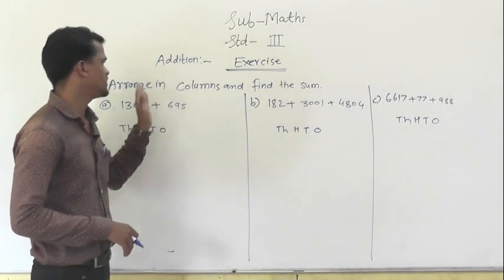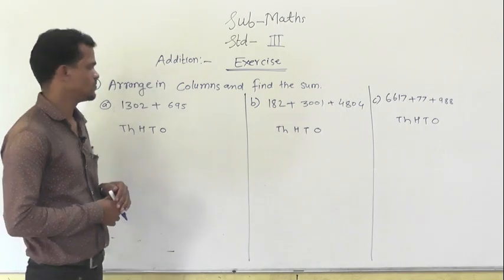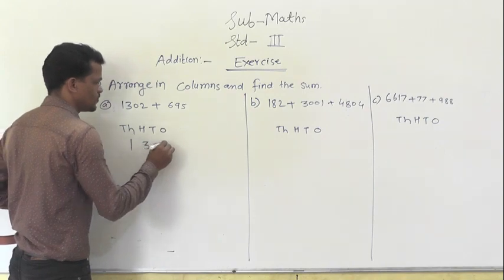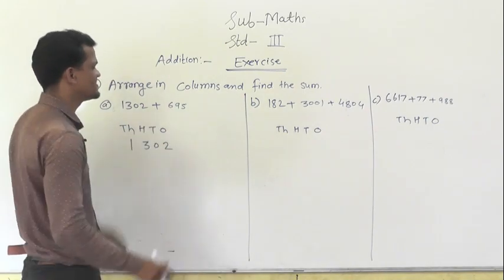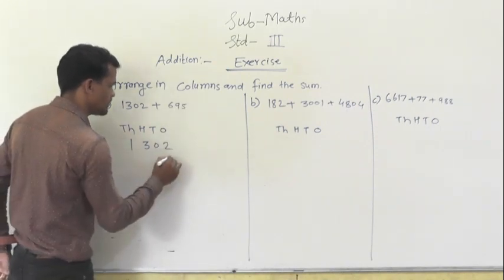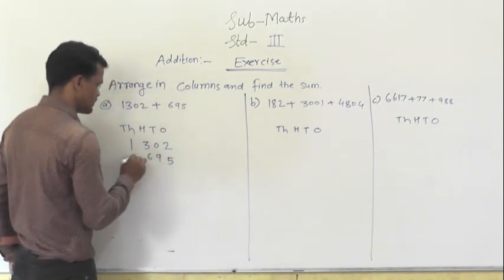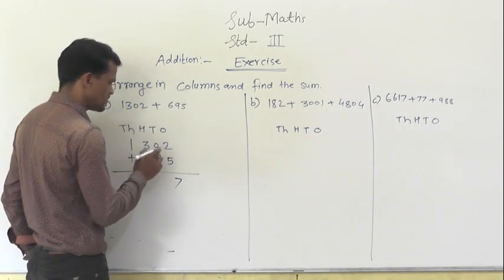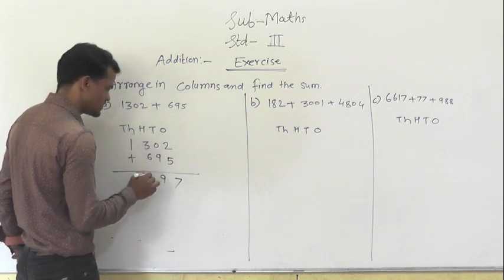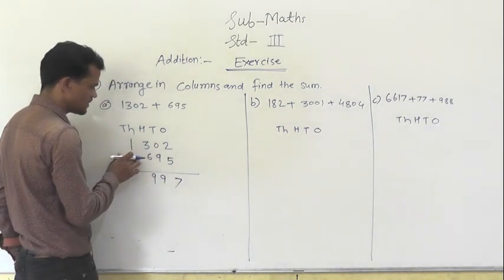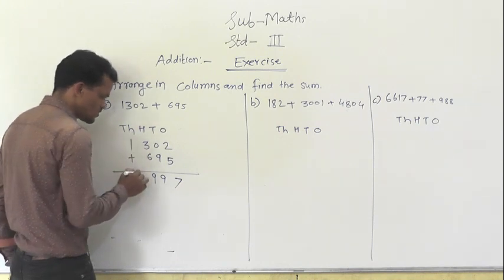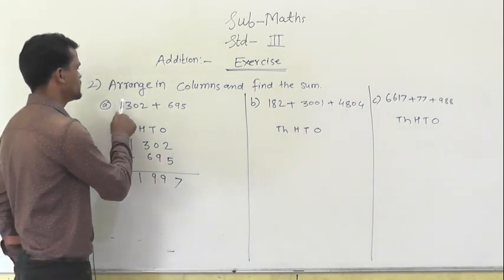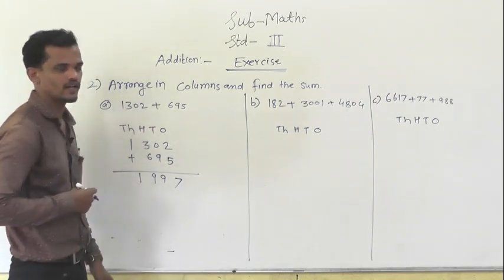Next question: arrange in column and find the sum. The first number is 1302, and 695 is a 3-digit number, so start from the ones place to write 5, 9, and 6. Add these numbers: 2 plus 5 is 7, 0 plus 9 is 9, 3 plus 6 is 9, and at the thousands place 1 with no other digit. So 1997 is the sum of 1302 and 695.